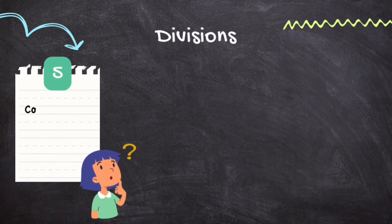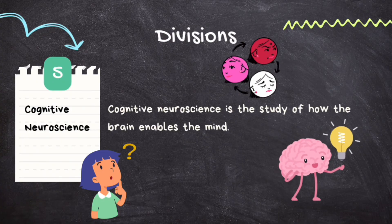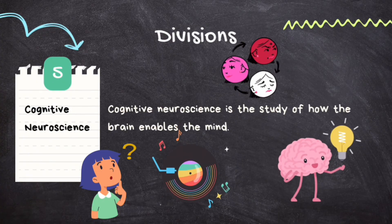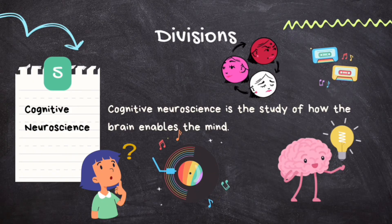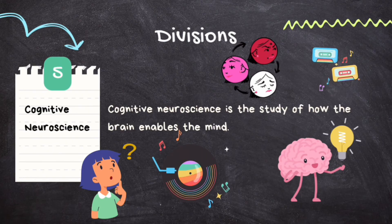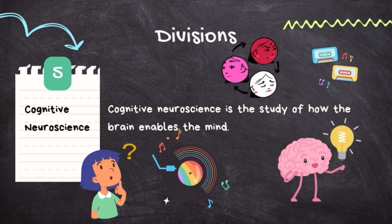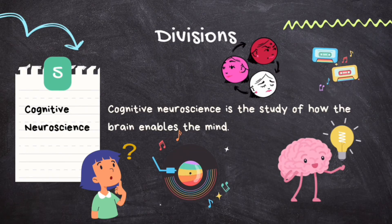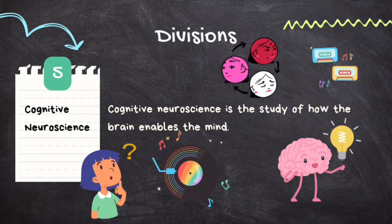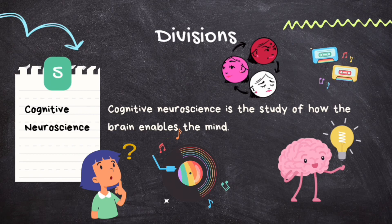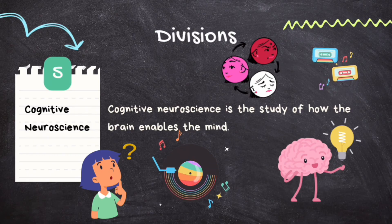The fifth division is cognitive neuroscience — the study of how the brain enables the mind. Using non-invasive techniques like functional brain imaging, it explores how the brain supports intricate mental functions like thinking, memory, and attention. For example, when you listen to your favorite song, different parts of your brain light up: the auditory cortex processes the sound, while the frontal lobe might make you tap your foot to the beat. Cognitive neuroscience uses brain scans to see which areas activate when you enjoy music, helping scientists understand how our brain turns melodies into emotions.